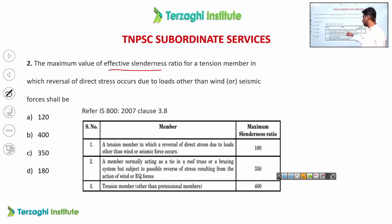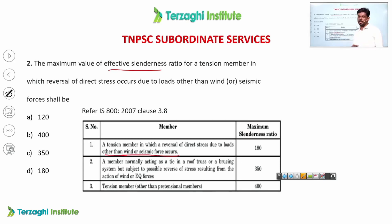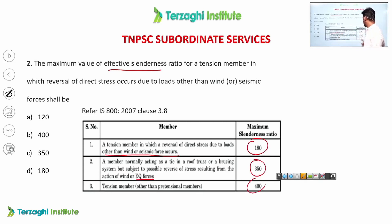For a tension member where reversal of stress is due to dead load and live load only, the effective slenderness ratio is 180. When reversal is due to wind or earthquake loads, it is 350. For members other than those with stress reversal, the limit is 400.